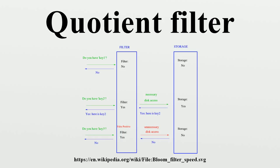Other AMQ operations include insert and optionally delete. The more elements are added to the set, the larger the probability of false positives. A typical application for quotient filters and other AMQ filters is to serve as a proxy for the keys in a database on disk. As keys are added to or removed from the database, the filter is updated to reflect this. Any lookup will first consult the fast quotient filter, then look in the database only if the quotient filter reported the presence of the key. If the filter returns absence, the key is known not to be in the database without any disk accesses having been performed.